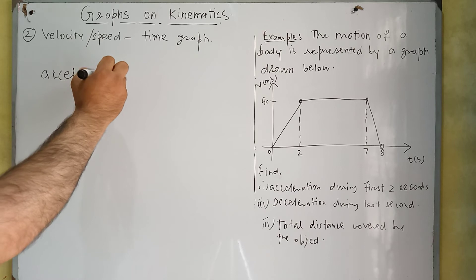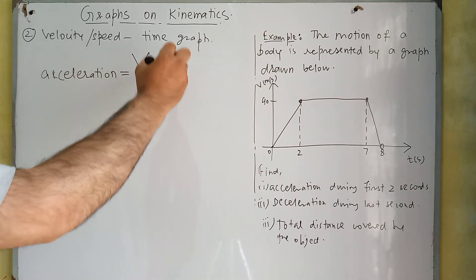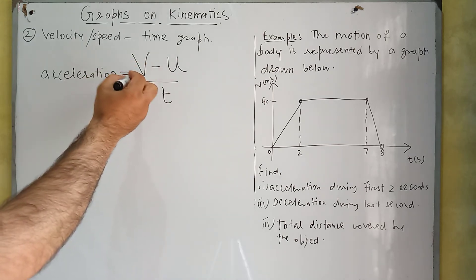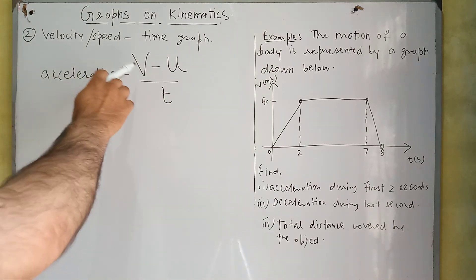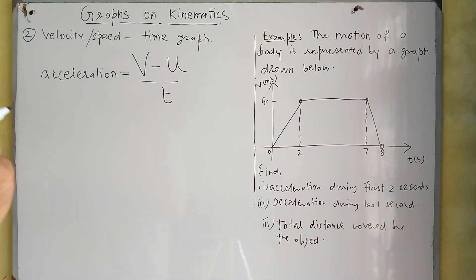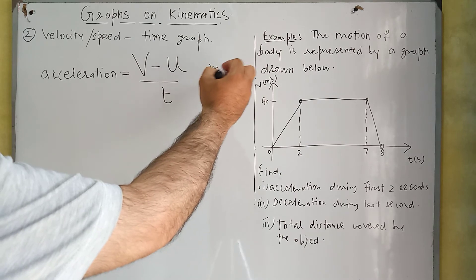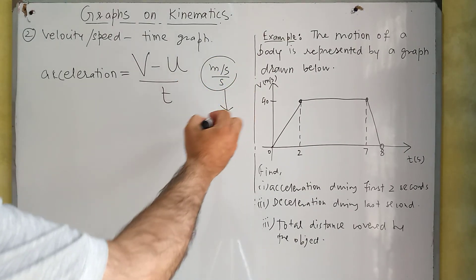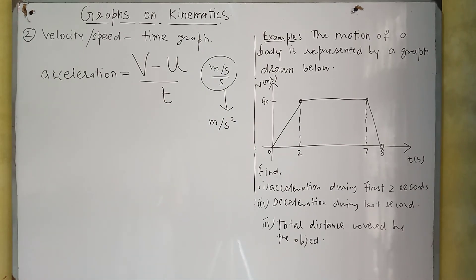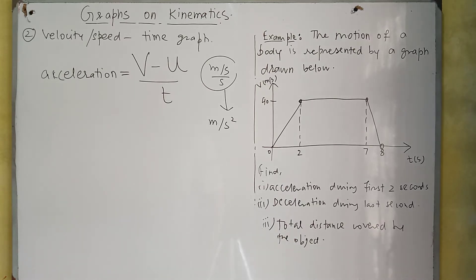The formula for acceleration is: final speed minus initial speed divided by time. Here v is final speed, u is initial speed, and t is time. The unit of velocity is meters per second, divided by time in seconds, so the unit of acceleration is meters per second squared. If the velocity of a body is increasing we have acceleration, and if velocity is decreasing we have retardation, sometimes called deceleration. The same formula is used for both.